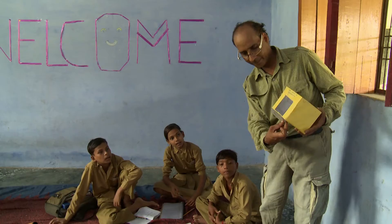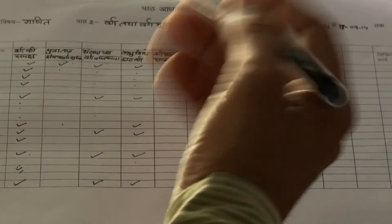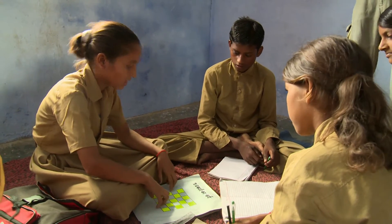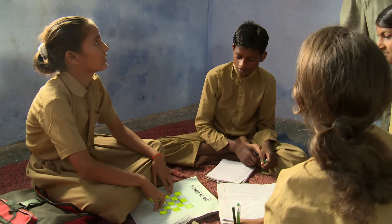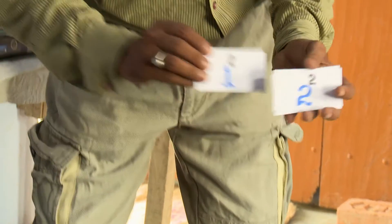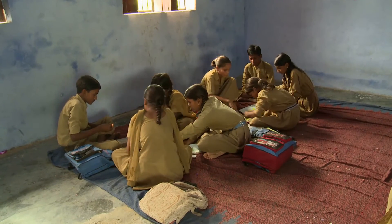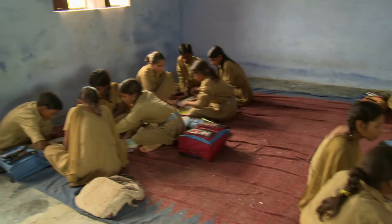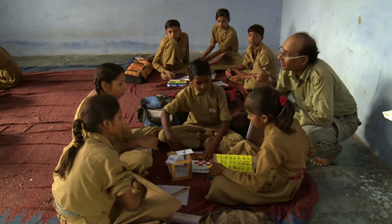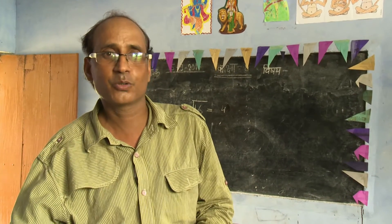I think most of my students, apart from two or three, have understood squares of numbers. I think five students have learnt the squares of numbers very well. I got a good response today. I mixed the groups so that some students who have understood join those who have not, so they can work together to solve the problems.